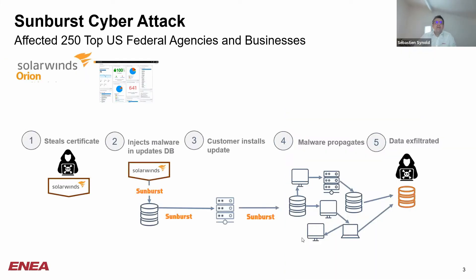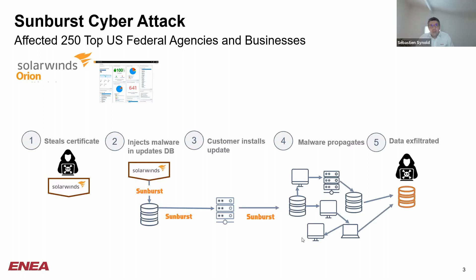Let us review the Sunburst attack that happened last year, affecting very well-protected critical organizations and federal agencies in the US. In the case of Sunburst, malware was introduced through an update on SolarWinds Orion software. Orion is a network management software largely deployed on critical infrastructures. The first stage of the attack was stealing the SolarWinds certificate and then using it to insert the malware code into the SolarWinds update repository.